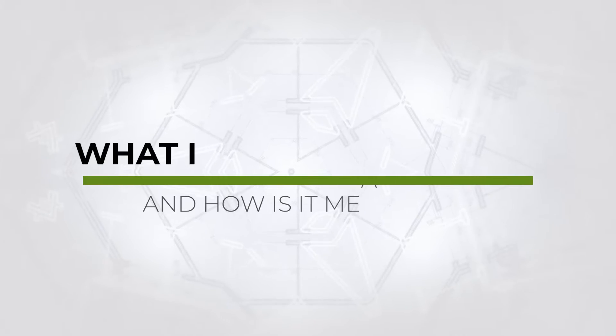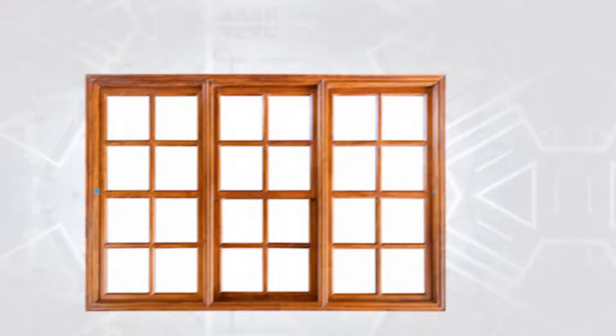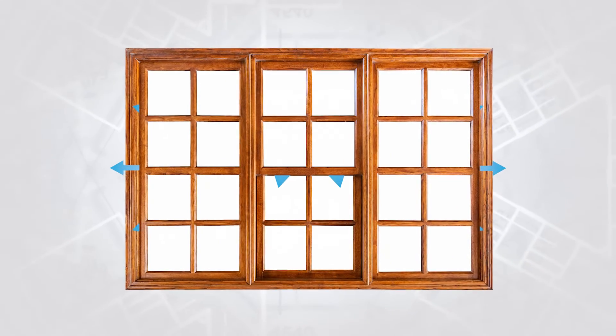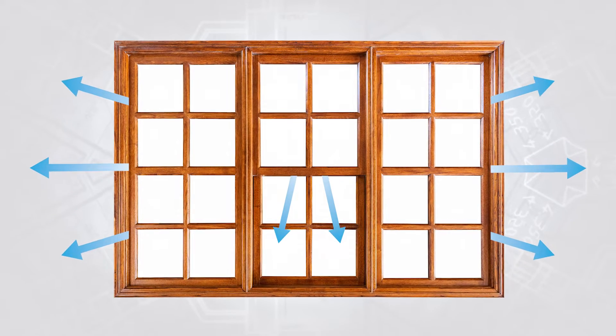From old worn out windows to cheap inefficient new windows, air leakage is a problem that can affect anyone. First, let's examine what air infiltration is and how it is measured. Air infiltration is air that manages to leak into or out of a room through the gaps in a window. The majority of air leakage occurs through the meeting rail and where the sashes meet the frame.